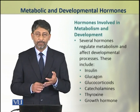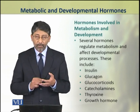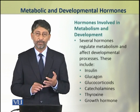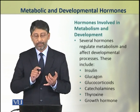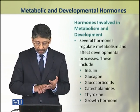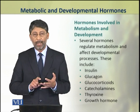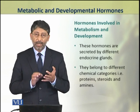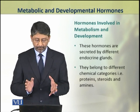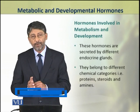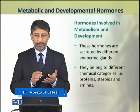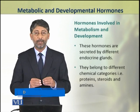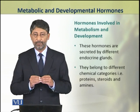Several hormones that we have studied so far are involved in the regulation of metabolism and developmental processes. These hormones include insulin, glucagon, glucocorticoids, catecholamines, thyroxine and growth hormone. These hormones are secreted by different endocrine glands and belong to different chemical categories — that is, they may be proteins, steroids or amines — but all have their role in metabolism and development.